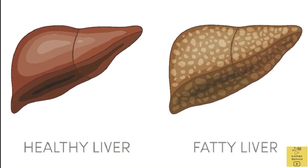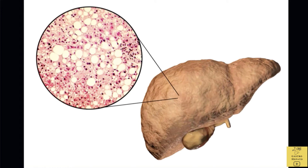This slide shows a normal liver on the left. It is brown in colour and has a smooth surface. On the right is a fatty liver. You can see that its colour is different and it is more yellow. There is also a picture showing how fatty liver looks under the microscope. You can see that there are lots of oil droplets within the liver cells.